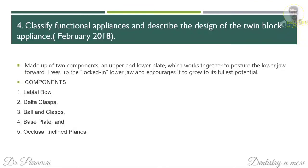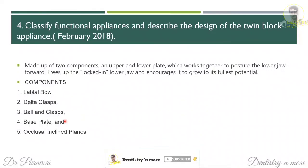Describe the design of the twin block appliance. The twin block appliance is made up of two parts: an upper and a lower plate. Together they work to position the lower jaw forward, freeing the locked-in lower jaw — in a Class 2 malocclusion, the lower jaw is stuck behind the upper jaw. The twin block helps free the lower jaw and encourages it to grow to its fullest potential. The components include the labial bow, delta clasp, ball-end clasps, base plate, and occlusal inclined planes.